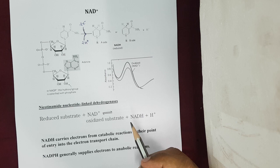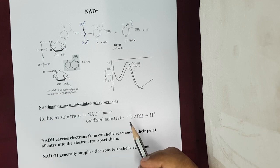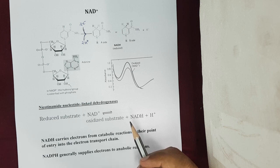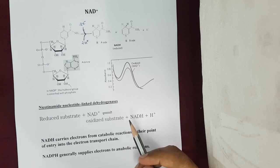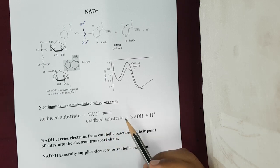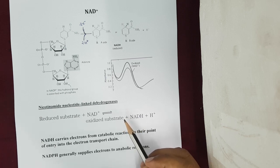As we discussed in the previous class, all the catabolic reactions ultimately provide energy to the cells in the form of ATP production inside the cells. In all those catabolic reactions, enzymes called dehydrogenases extract electrons from the catabolic reactions and donate those electrons to the universal electron carriers called NAD or FAD. These NAD and FAD capture the electrons and ultimately donate them to the electron transport system. That is why we need to understand the electron carriers.